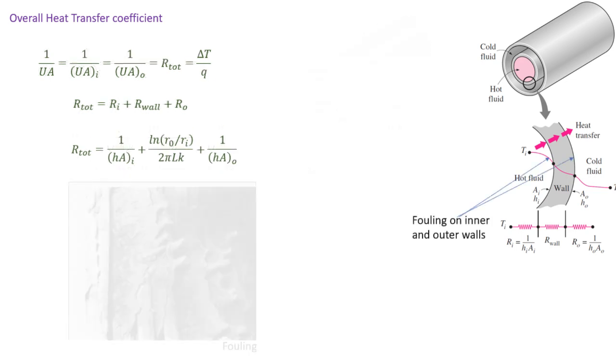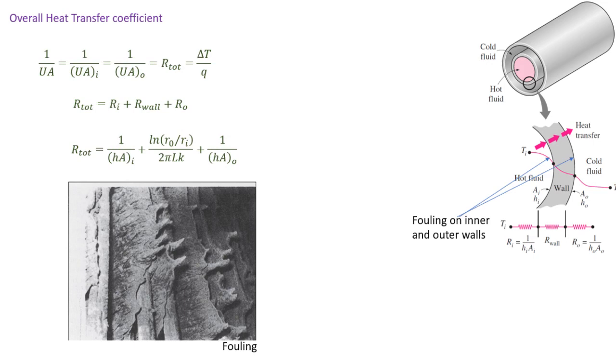Another thing we need to be concerned about is fouling. So the performance of heat exchangers will deteriorate over time as the result of an accumulation of deposits on those heat transfer surfaces. Those deposits, which can happen on the hot side and the cold side, increase the thermal resistance and have to be accounted for.